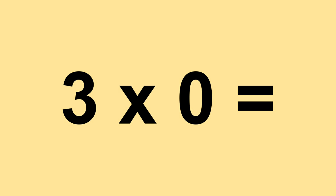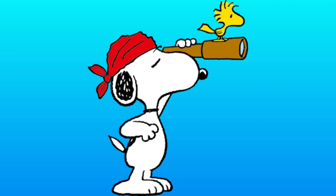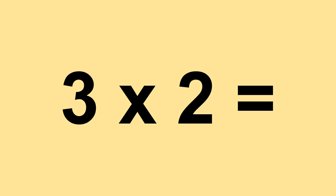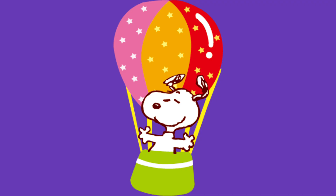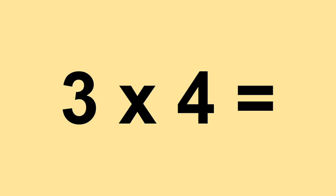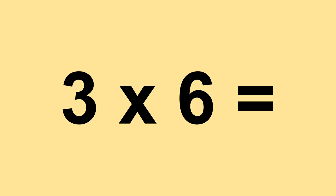3 times 0 equals 0. 3 times 1 equals 3. 3 times 2 equals 6. 3 times 3 equals 9. 3 times 4 equals 12. 3 times 5 equals 15. 3 times 6 equals 18. 3 times 7 equals 21.